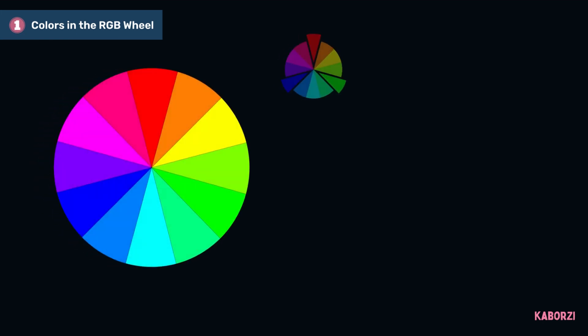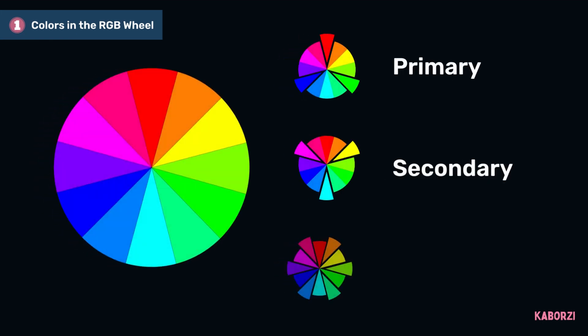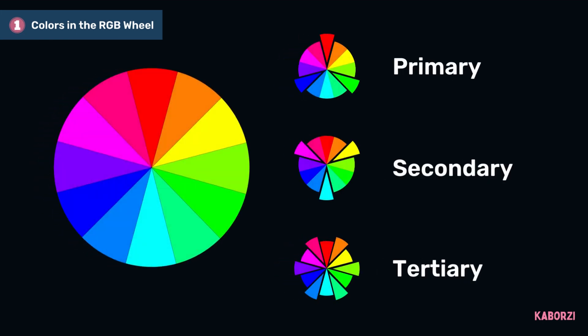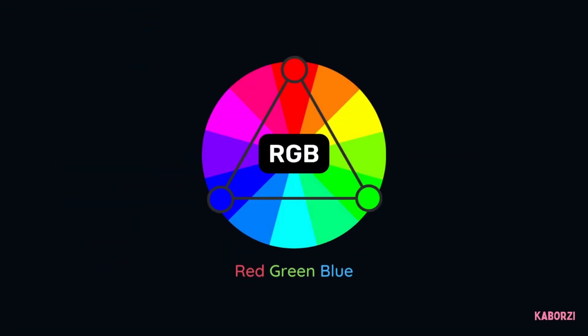The Color Wheel can be divided into primary, secondary, and tertiary colors for a grand total of 12 main colors. For simplicity, we'll focus just on the RGB Wheel from here on out, since this is what we'll use for e-learning.